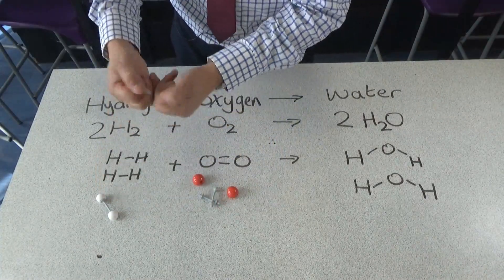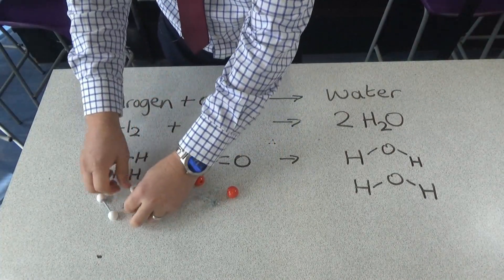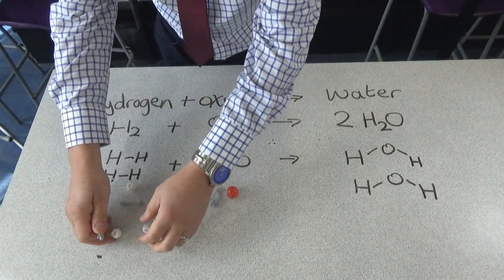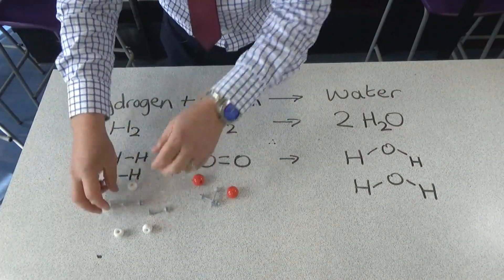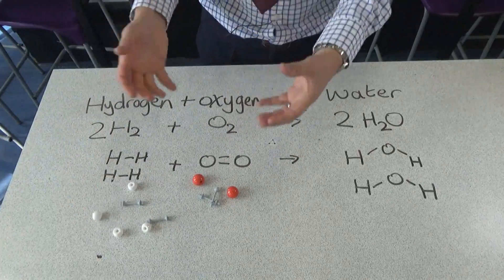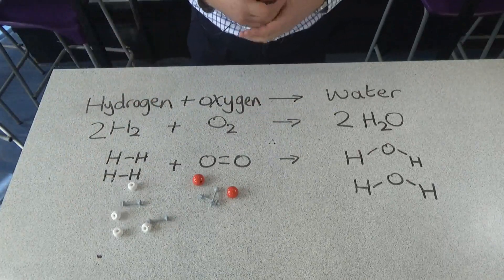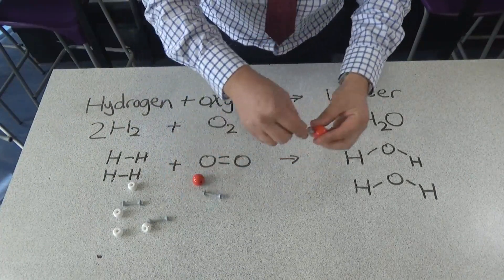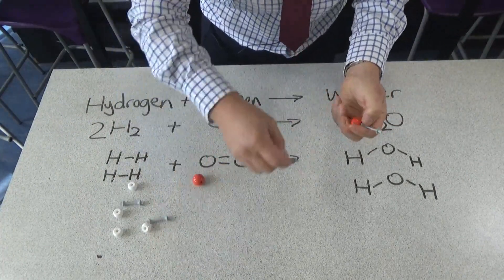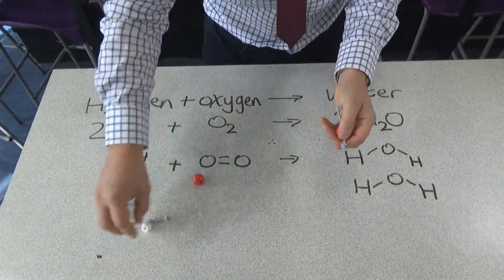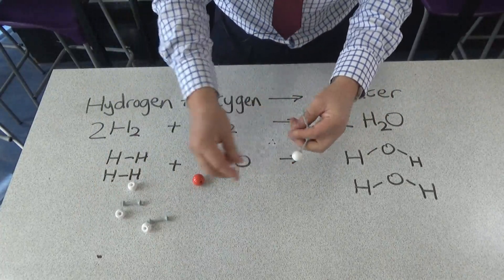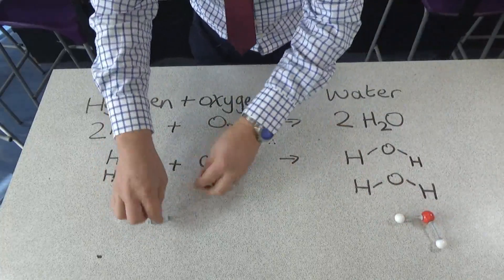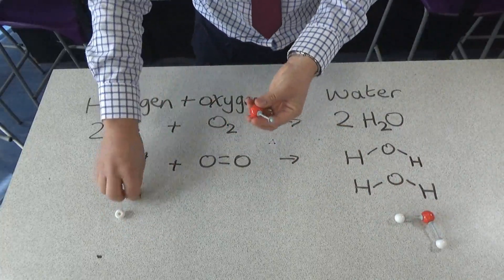Breaking bonds is an endothermic process — we have to put energy in to break those bonds, and that energy we put in is called the activation energy. Once we've got the atoms separated, they can then rearrange to make the new product, which is two molecules of water. New bonds start to form between the oxygen atoms and the hydrogen atoms, and when those new bonds are forming, it releases energy — it's an exothermic process.